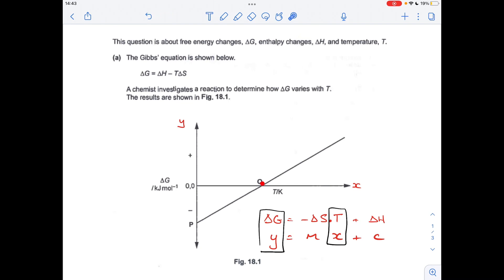And the point Q is the temperature at which the reaction changes feasibility. You can see below that temperature, delta G is negative so the reaction is feasible up to that temperature, and then delta G goes to positive so it's not feasible after that temperature. So you can just call this the feasibility point or the feasibility temperature.